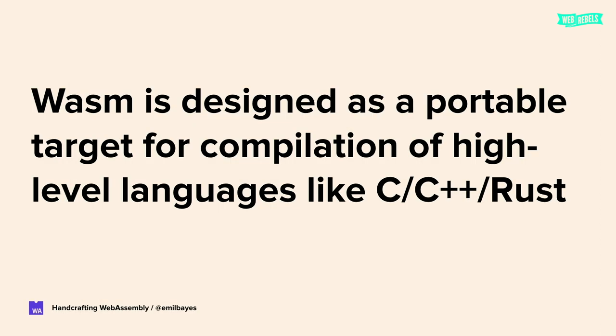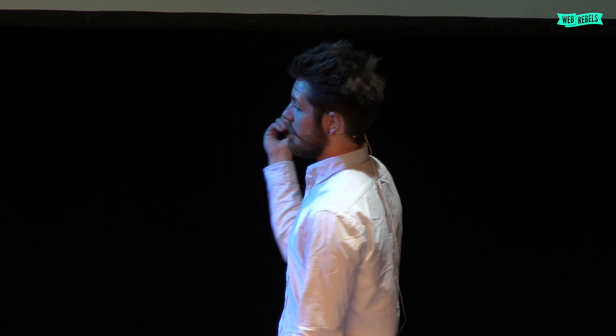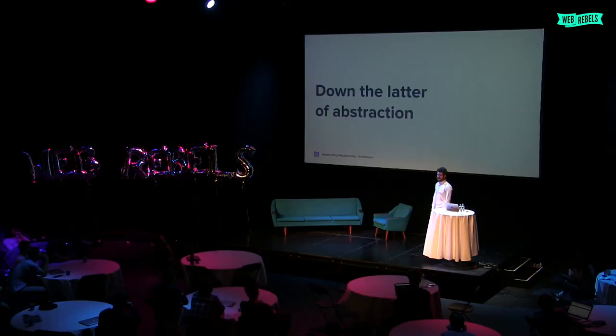WebAssembly was not designed to be handwritten like we're going to do today. It was designed to be a compilation target — a way to abstract away the actual physical machine so you could take any code, compile it to a portable format, and run it anywhere. That's also what Java said: write once, run anywhere. But when I started out with WebAssembly, I'm a JavaScript developer — I don't know C, C++, or Rust. Why do I have to learn those? So instead of going up a level of abstraction, we're going to go down the ladder of abstraction into WebAssembly.